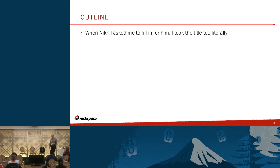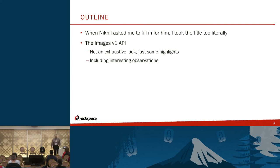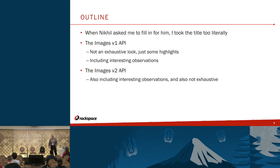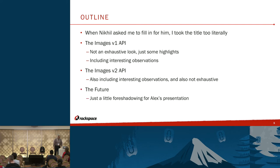We're planning M, so we're halfway through the alphabet. It makes sense to go back and see what's happened with all those letters that came before, up to L. So what I'm going to talk about is the Images V1 API — not an exhaustive look, just some highlights about what's been implemented. Then with the Images V2 API, sort of the same deal. And then a little bit of foreshadowing about V3, which Alex will be talking about.